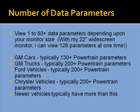The number of data parameters is also very important. Depending upon the size of your monitor, you can view anywhere from 1 to 80-plus data parameters. On a 22-inch widescreen monitor, you can view up to 128 parameters at one time. GM vehicles typically support 130 or more — trucks 200 or more. Ford typically 200 or more, and the newer the vehicle, the more parameters it will have.